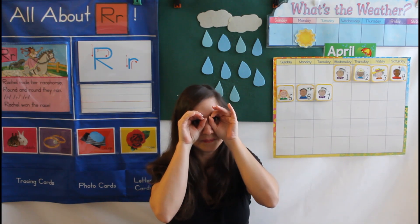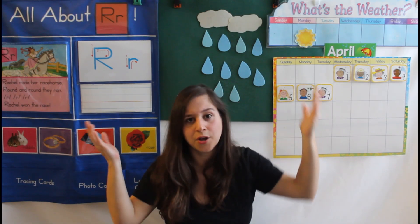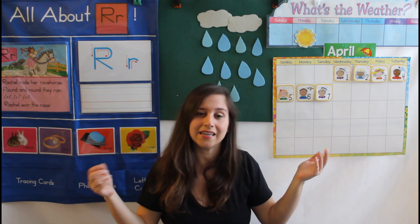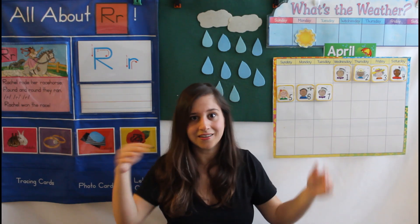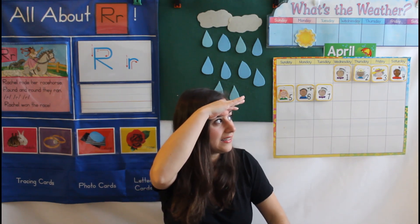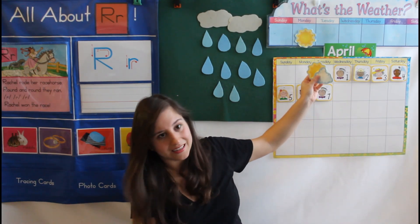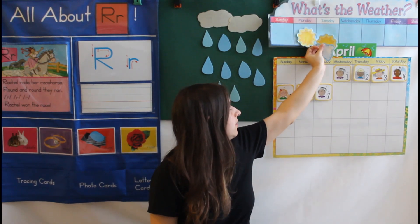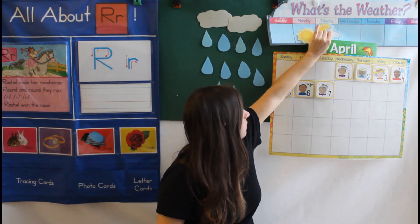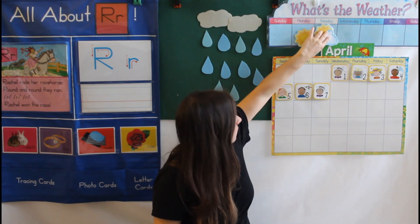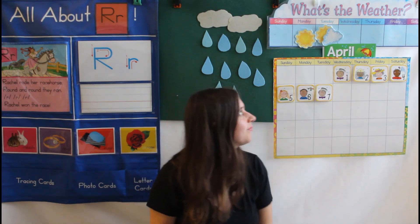Great job. Get those spying eyes on. Look outside your window. What's the weather? What's the weather like today? Is it windy? Is it cloudy? Is there rain? Or is there sun? What do you see up high in the sky? I see some clouds, but it looks like the sun is trying to peek through. So we'll put a sun and a cloud on our weather for Tuesday.